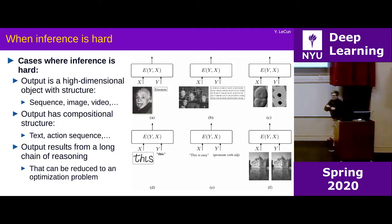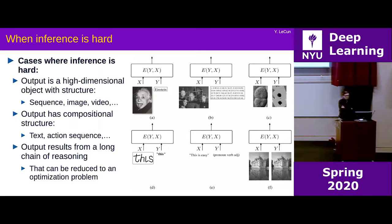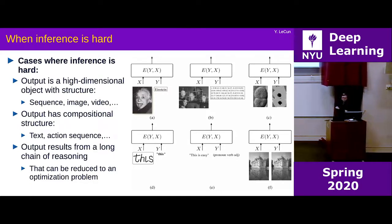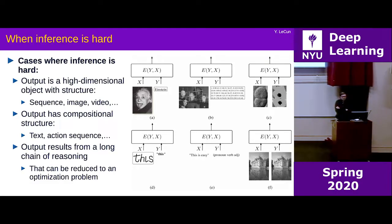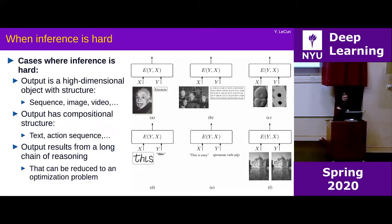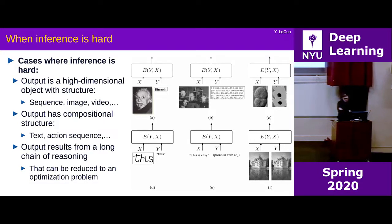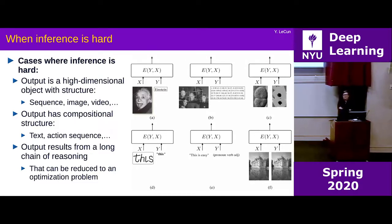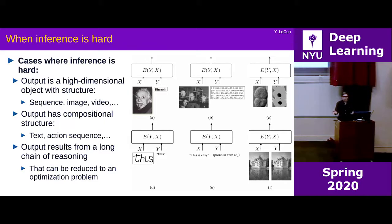The situations where you might want to use EBMs are when inference is more complex than just running through a few layers of a neural net, when the output is high-dimensional with structure like a sequence, image, or video, when the output is compositional structure like text or action sequences, or when the output should result from a long chain of reasoning — essentially solving a constraint satisfaction problem to produce the output.